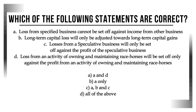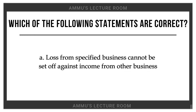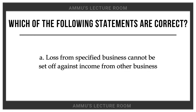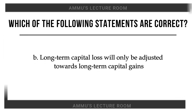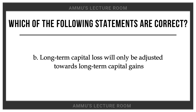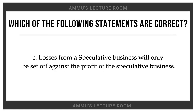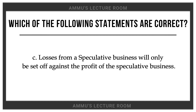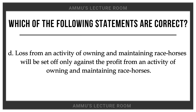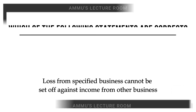Which of the following statements are correct? Option A: Loss from specified business cannot be set off against income from other business. Option B: Long term capital loss will only be adjusted towards long term capital gain. Option C: Losses from speculative business will only be set off against the profit of speculative business. Option D: Loss from the activity of owning and maintaining racehorses will be set off only against the profit from an activity of owning and maintaining racehorses.